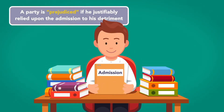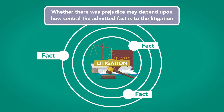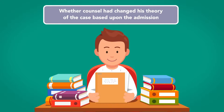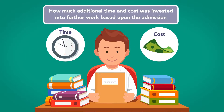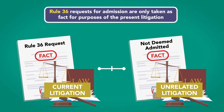A party is prejudiced if he justifiably relied upon the admission to his detriment — for example, if he built his entire case around that admission. Whether there was prejudice may depend upon how central the admitted fact is to the litigation, whether counsel had changed his theory of the case based upon the admission, and how much additional time and cost was invested into further work based upon the admission. Rule 36 requests for admission are only taken as fact for purposes of the present litigation; the fact is not deemed admitted in later unrelated litigation proceedings.